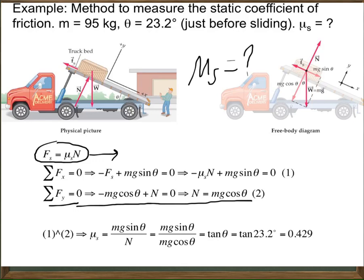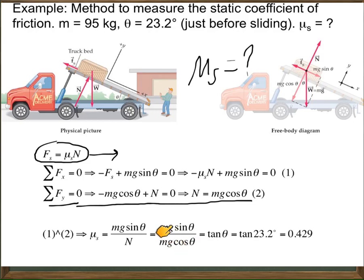Since you now know the normal force from the second equation, you can solve the first equation. If you put N equal to mg cos theta, you can solve for mu s. You will find mu s equals mg sin theta divided by mg cos theta. The mg cancels from both numerator and denominator. The problem says sliding happens when the angle equals 23.2 degrees, and tangent of this angle is nothing but the coefficient of static friction.